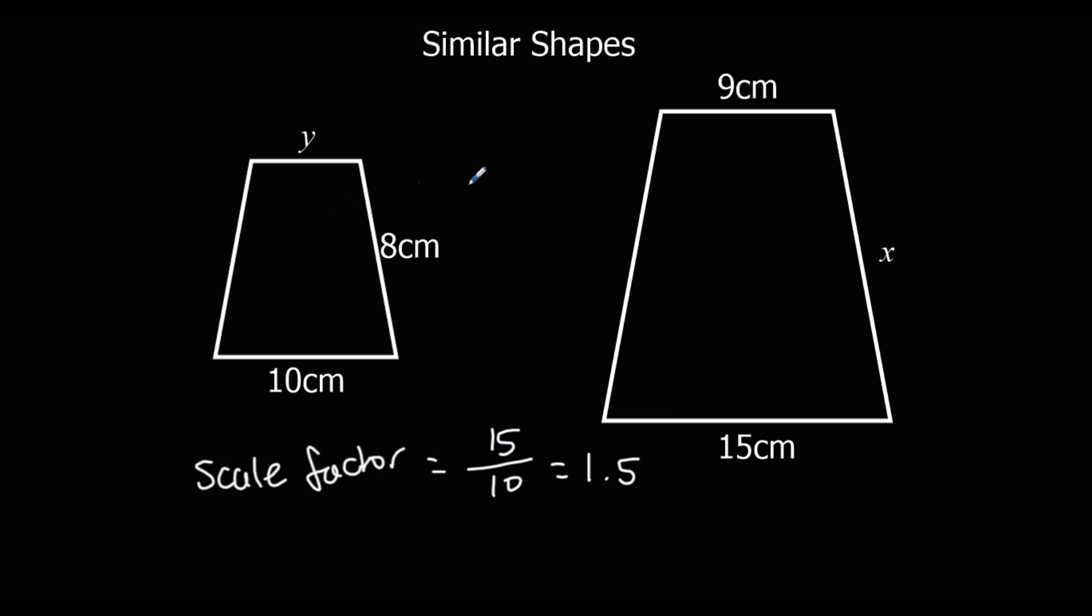So to go from the little shape up to the big shape, I'm going to times by 1.5. And to go back, I do the opposite, which is divide by 1.5. Now we can work out x. So x is 8 times 1.5. One times 8 is 8. Half an 8 is 4. So 1.5 times 8 is 12. So it's 12 centimeters.